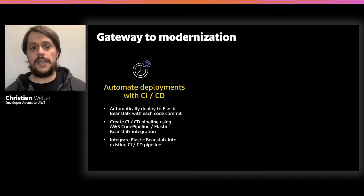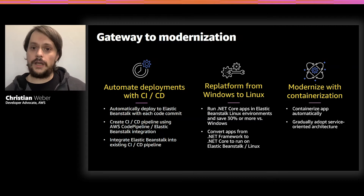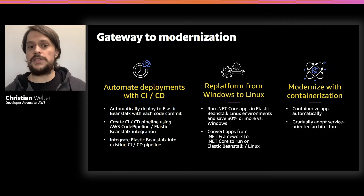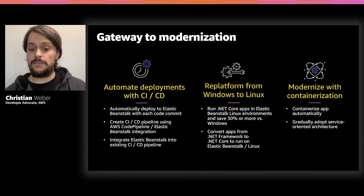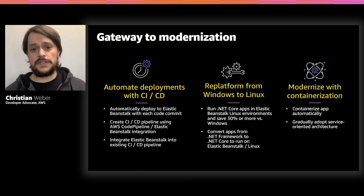For our customers, Elastic Beanstalk ends up being a gateway to modernization. For a lot of customers thinking about migrating workloads to AWS, it is very common to adopt a lift and shift methodology — bringing a compute instance from your on-premise data center and migrating it directly to a compute instance on AWS. This is certainly a valid way, but we find it becomes even more efficient to use Elastic Beanstalk. Specifically, it allows customers to quickly adopt continuous integration and continuous deployment, makes platforming from Windows to Linux efficient, helps save money quickly, and is a gateway to containerization as well.